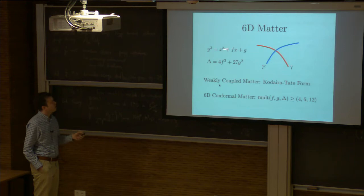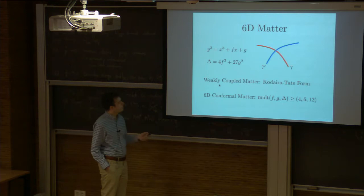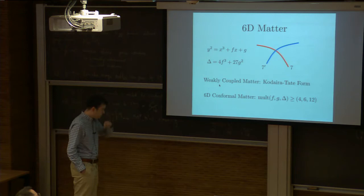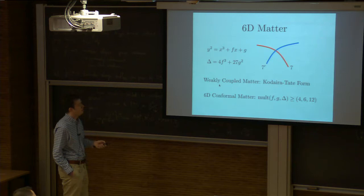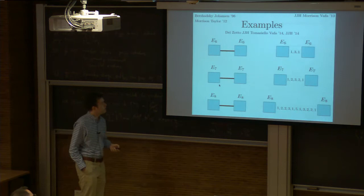What's new with matter? We can talk about components of the discriminant locus. If we have two intersecting seven-branes, then so long as the order of vanishing for F and G is sufficiently low, everything remains in Kodaira-Tate form and we know how to read off the corresponding matter content. The novelty is what happens when the multiplicity or order of vanishing for F, G, and Delta gets sufficiently bad — 4, 6, and 12 being the order of vanishing for F, G, and Delta.